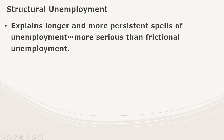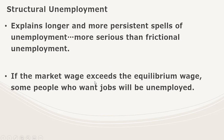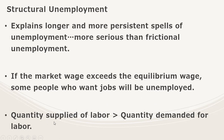Structural unemployment explains longer and more persistent spells of unemployment, and it's more serious than frictional unemployment. If the market wage exceeds the equilibrium wage, some people who want jobs will be unemployed. The quantity supplied of labor will exceed the quantity demanded for labor. So what can cause the wage to exceed the equilibrium wage, or the market clearing wage?